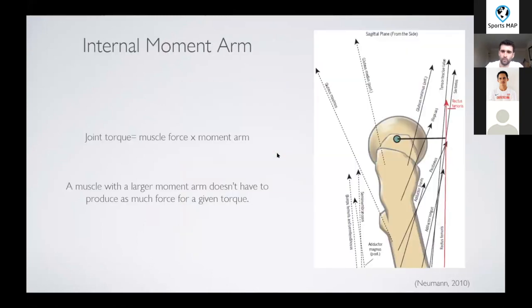Then there's the internal moment arm. The internal moment arm, if we can see on the right here, it's the distance between the muscle's line of force and the joint axis of rotation. If the muscle has a longer moment arm, it will convert a given force to more torque. So it has an advantage over other muscles with smaller moment arms.